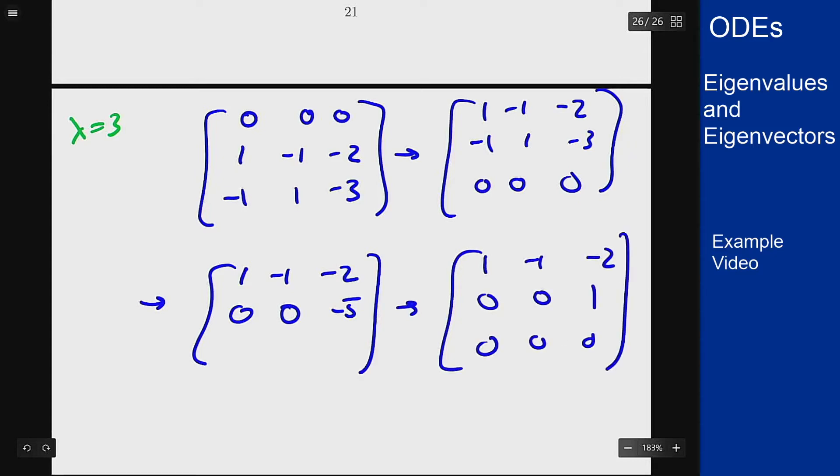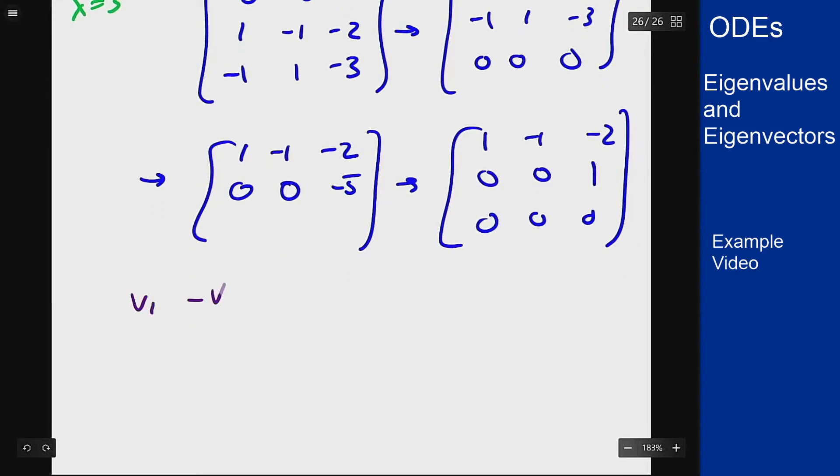This gives me the following equations: v1 minus v2 minus 2v3 equals 0 and v3 equals 0. Let's say v3 is 0 so this term is gone. I can now pick v2 to be 1 and so v1 is 1 as well. So my vector here is going to be 1, 1, 0.